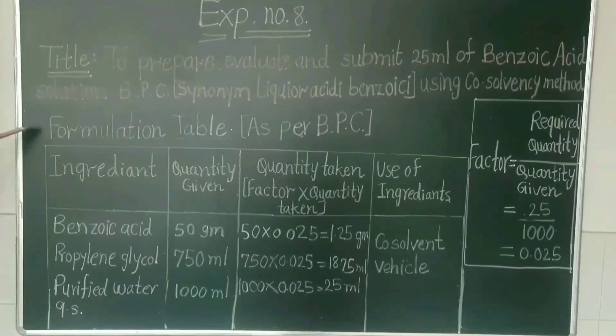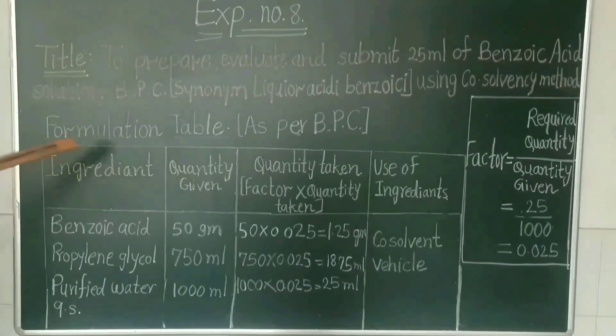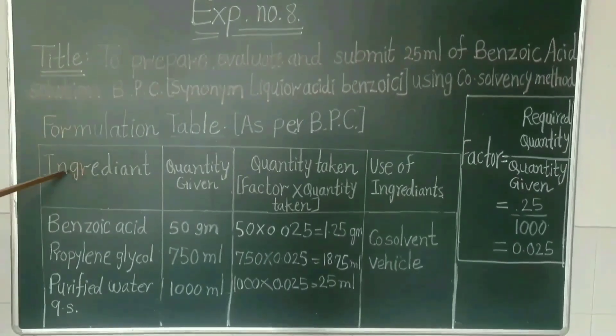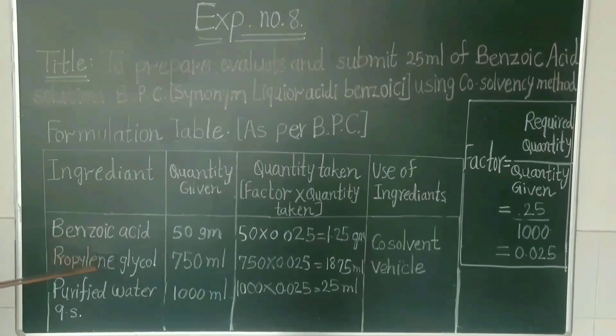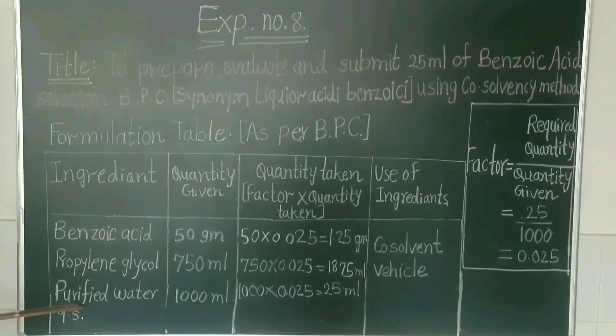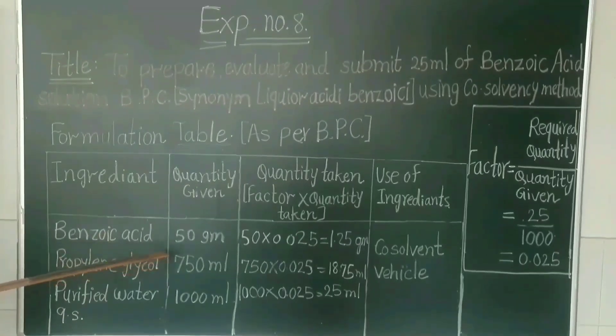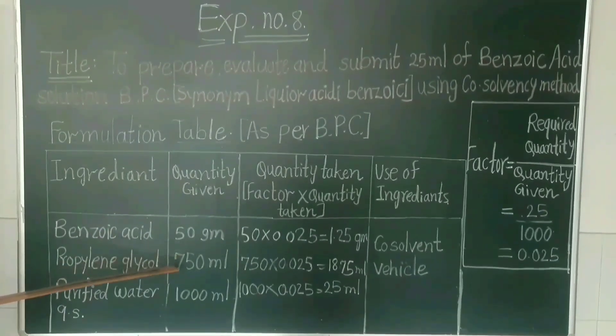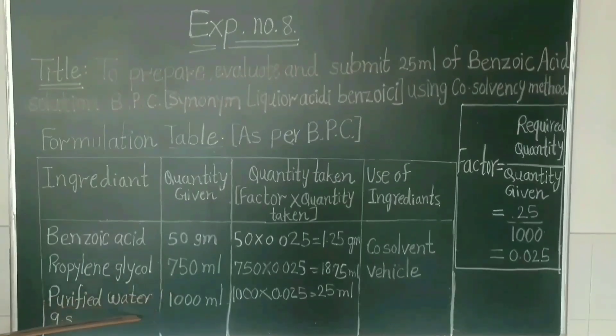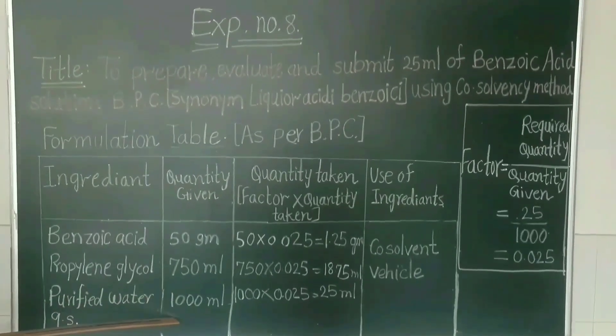Formulation table is given as per BPC. Ingredients: benzoic acid, propylene glycol, purified water quantity sufficient. Benzoic acid quantity given is 50 grams, propylene glycol 750 ml, purified water 1000 ml.